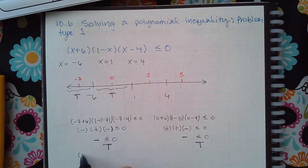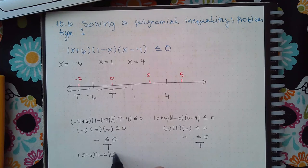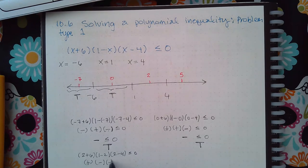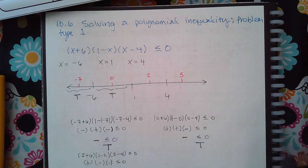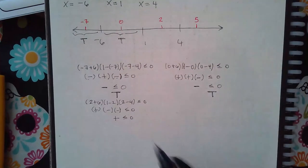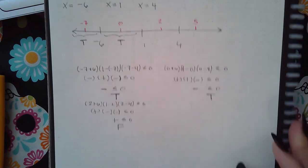Then we need to test 2, so 2 plus 6, 1 minus 2, 2 minus 4. Here we get a positive, here we get a negative, and here we get a negative. So we get positive in the end, and positive is not less than or equal to 0. This is false, so in this interval we get a false statement.